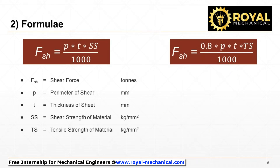The formula used to calculate the shear force is: Fsh equals the product of P, T, and Ss, divided by 1000. We can also use the formula: Fsh equals the product of 0.8, P, T, and Ts, divided by 1000.